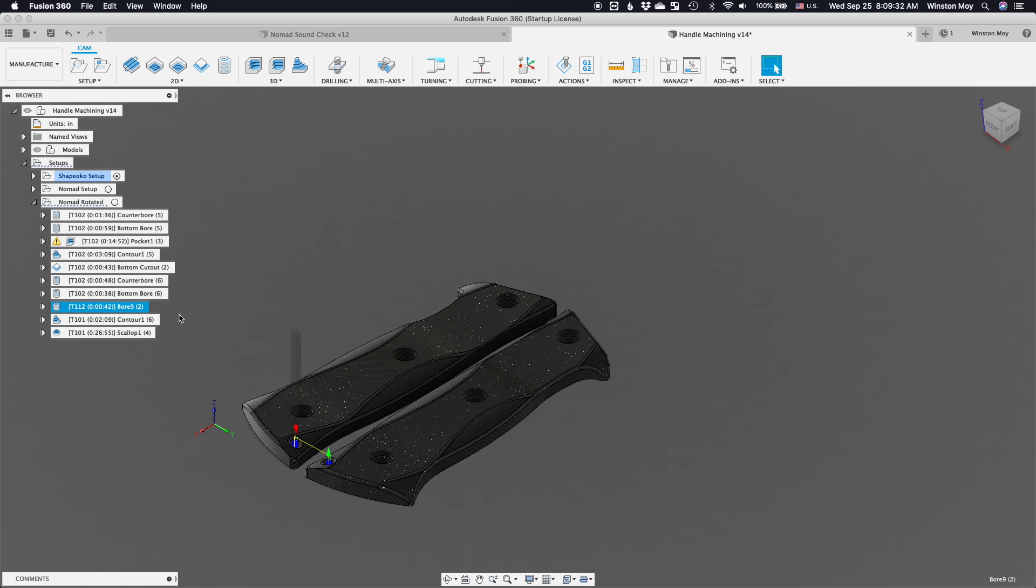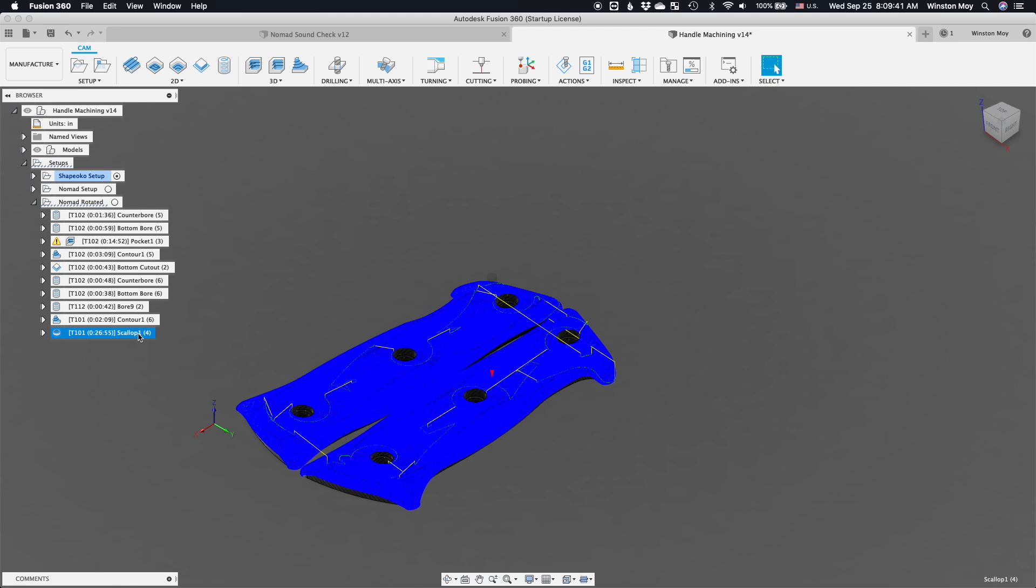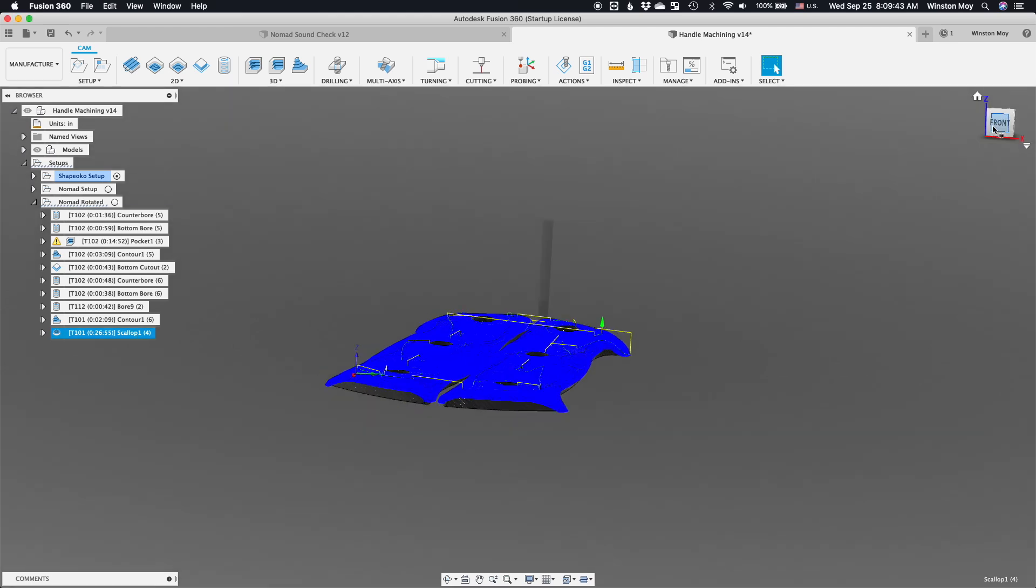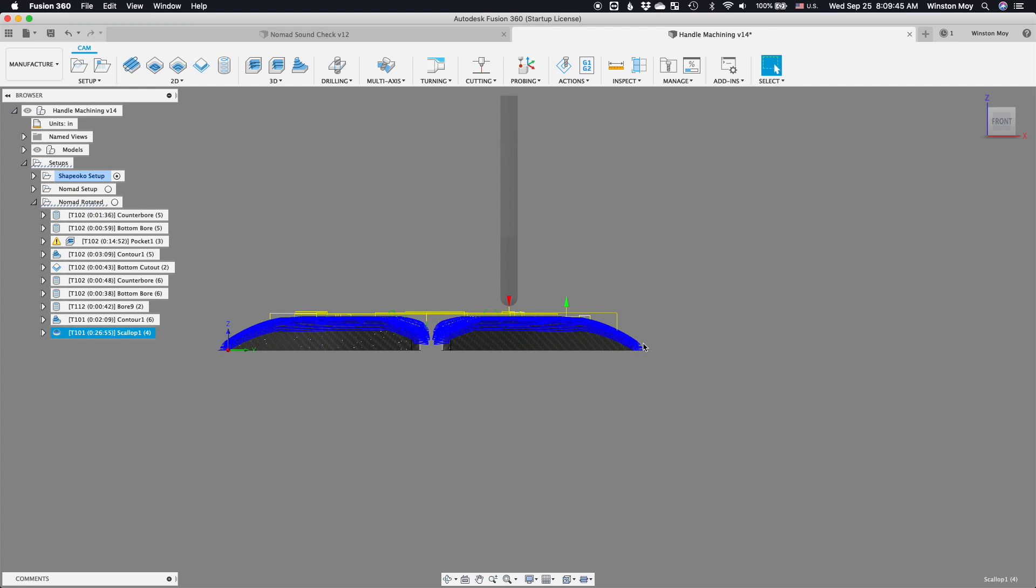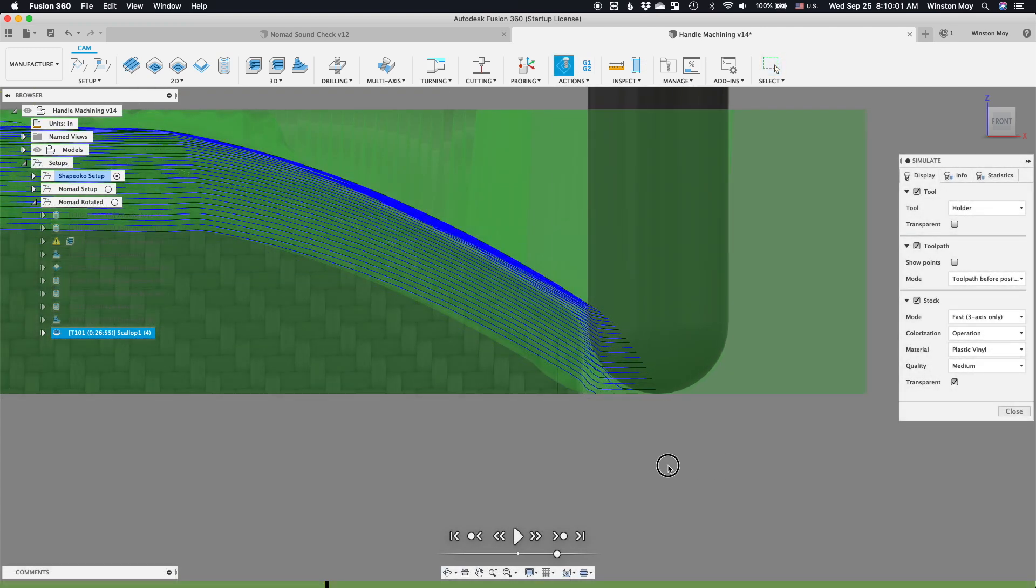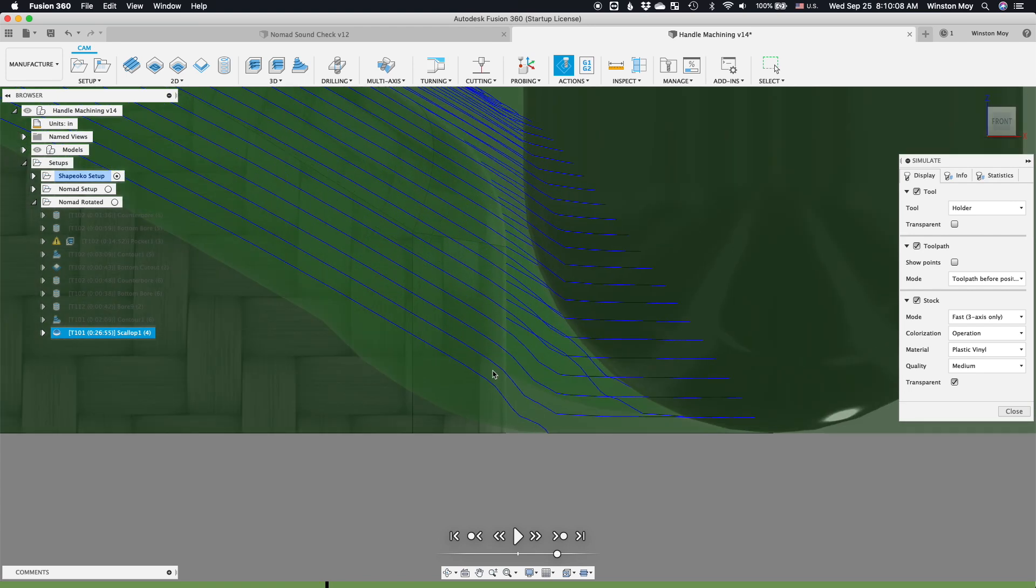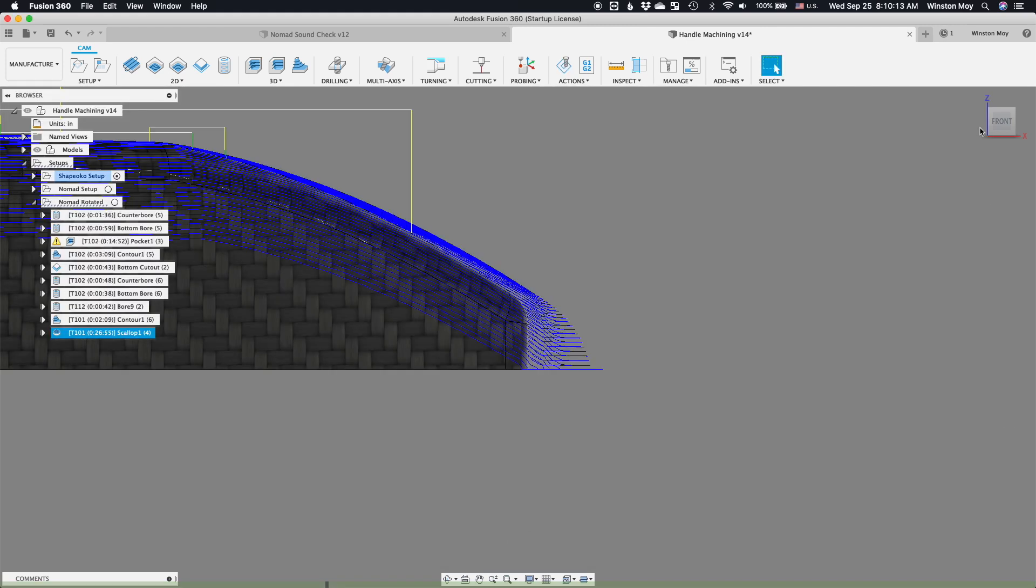Stepover is 5 thou or about an eighth of a millimeter. And I should note that I'm leaving about 3 to 4 thou of radial stock to leave. This is to account for any slop or other sources of inaccuracy in my fixtures. The pinholes I machined for my stations were all interpolated. I didn't ream them so they aren't perfectly round and snug. Every subsequent operation could have introduced a thou or two of inaccuracy.